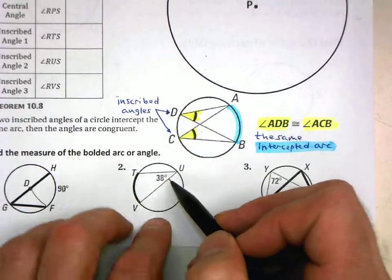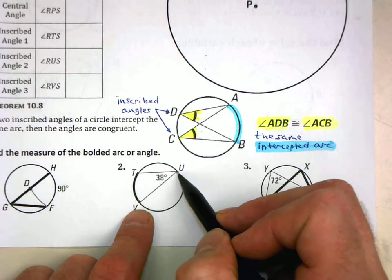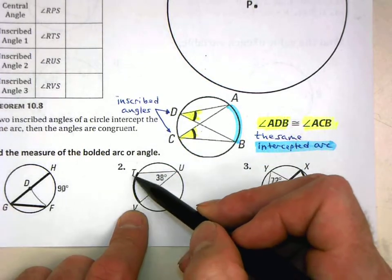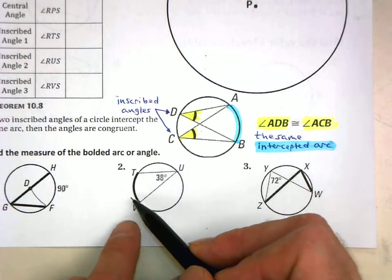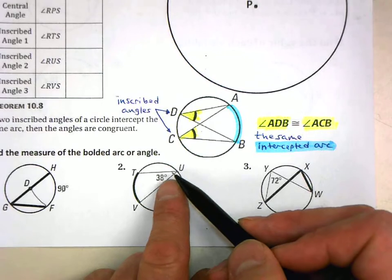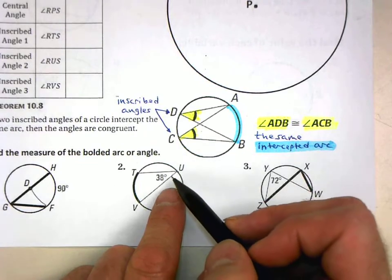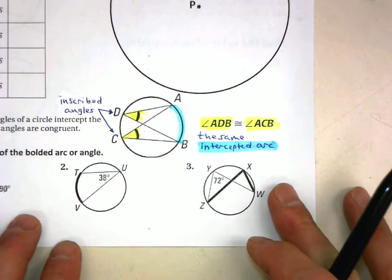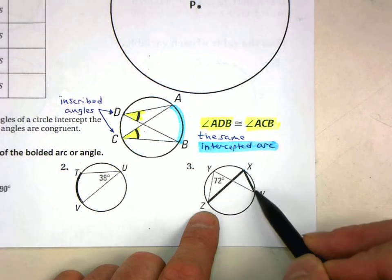Over here we're doing the converse. This is an inscribed angle because the vertex is on the circle. The inscribed angle is 38 degrees. What is the measure of the intercepted arc? Since the inscribed angle is half of the measure of the intercepted arc, to go back the other way instead of multiplying by one-half, I multiply by two. So two times 38 gives the measure of the intercepted arc.